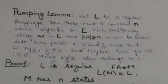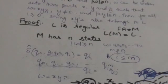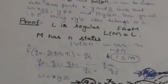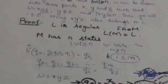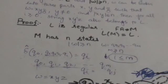Then for all values of i greater than or equal to zero, the string x y^i z also belongs to L. Now let us prove this lemma. Suppose L is a regular language which is accepted by finite automata M. It means the language of finite automata M is L. Suppose M has n states — there are n states in finite automata M.